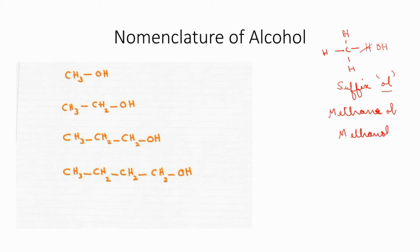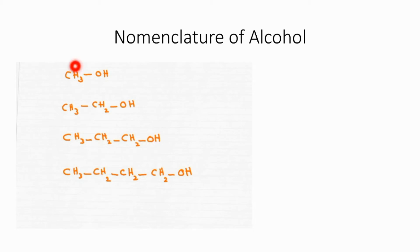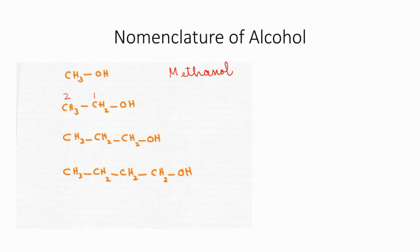Now how do we name these compounds? Earlier it was methane; now it has become an alcohol — we remove that 'e' and attach the suffix '-ol' to get methanol. What about a two-carbon compound? Earlier it was ethane; we remove that 'e' and attach '-ol' to get ethanol.